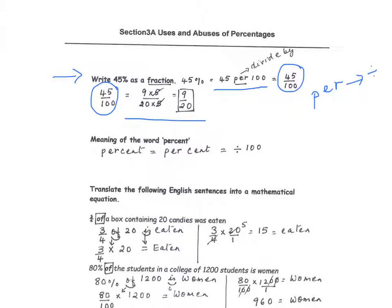We can simplify the fraction and bring it to lowest terms by canceling common factors, so 45% is the same as 9 over 20. The word 'percent,' if we break it into two parts, is 'per cent.' 'Per' translates to division, and 'cent' is a short form for 100 — it likely comes from the word 'century.' In word problems, we translate sentences into math equations.